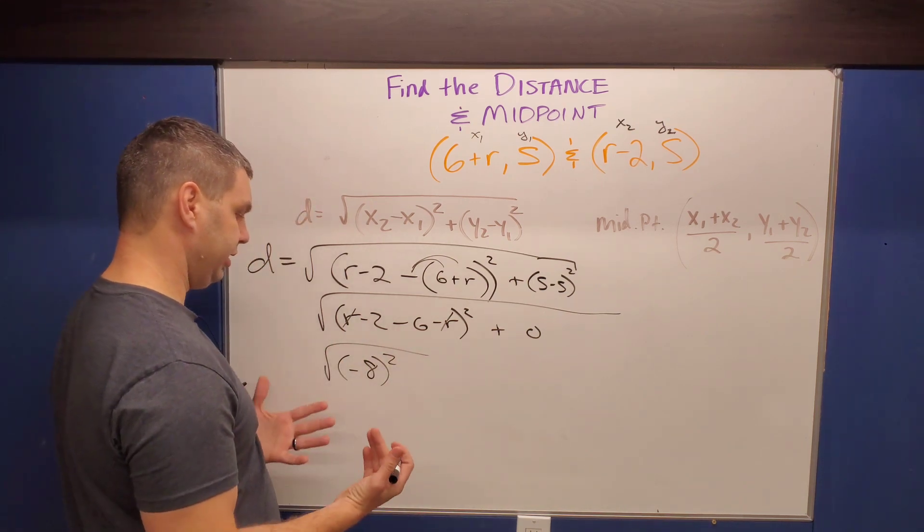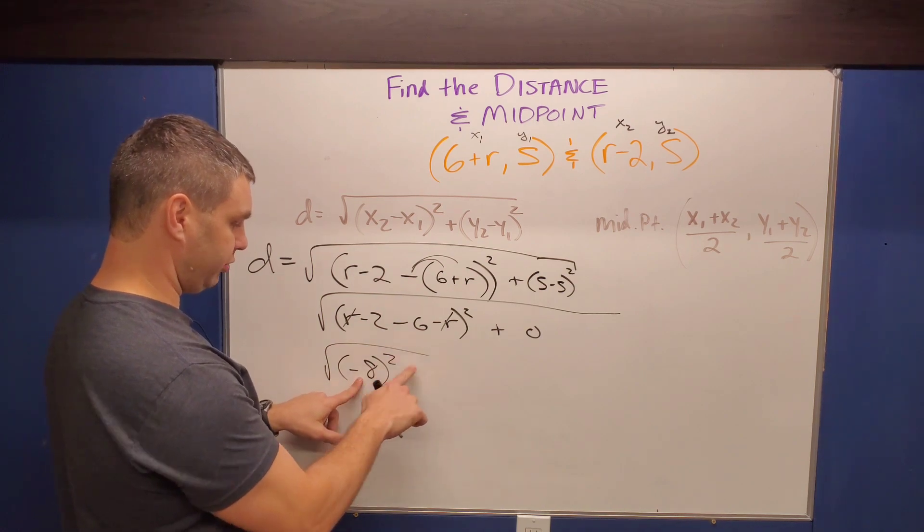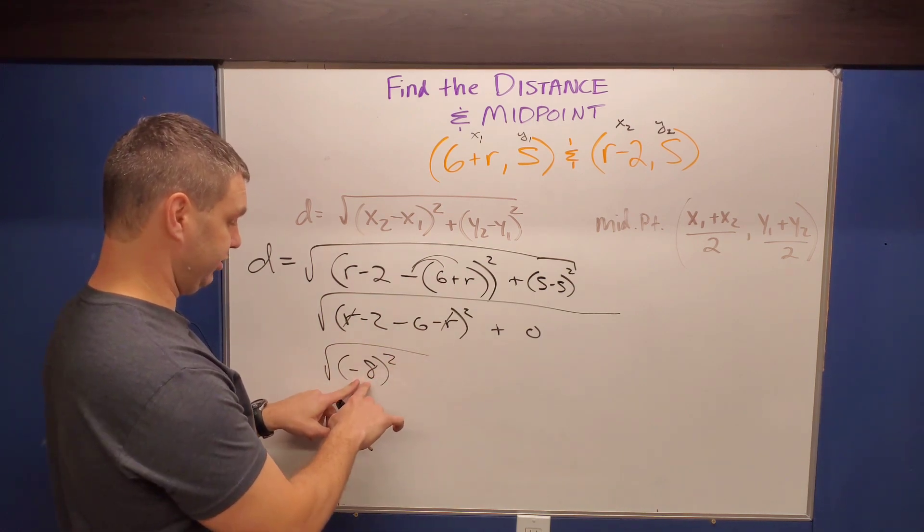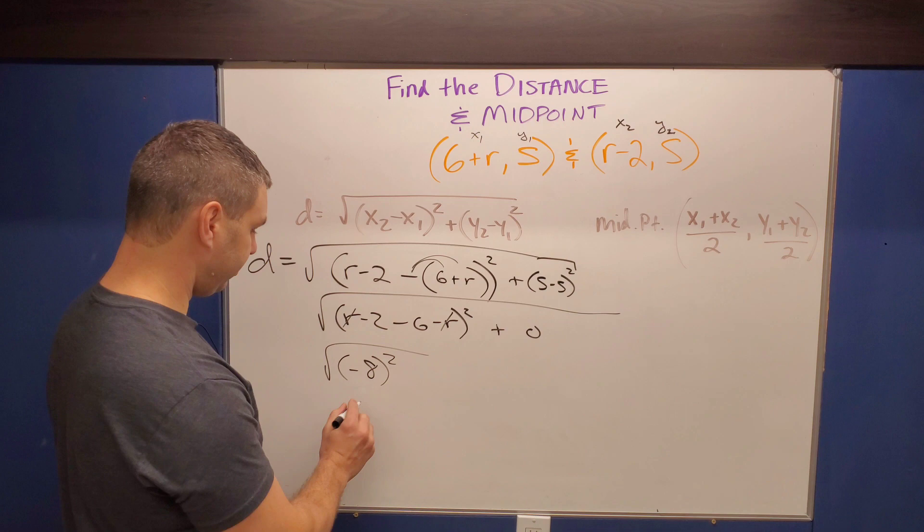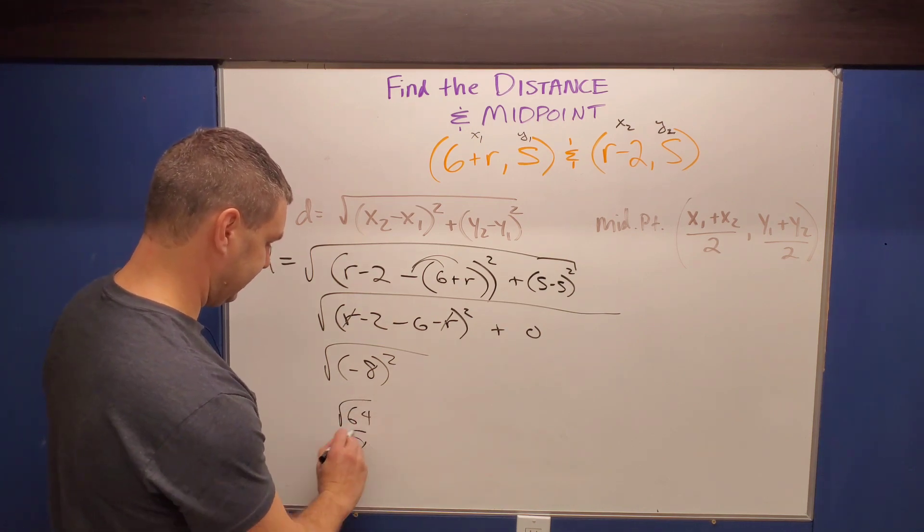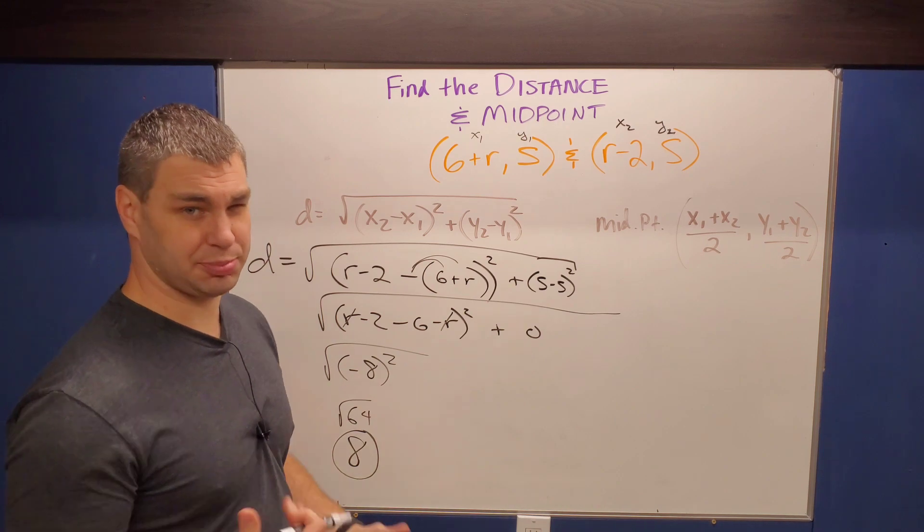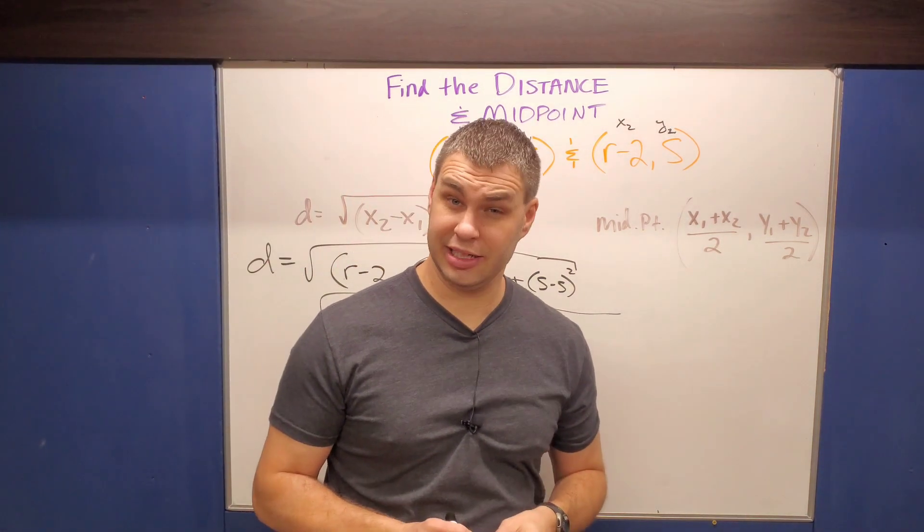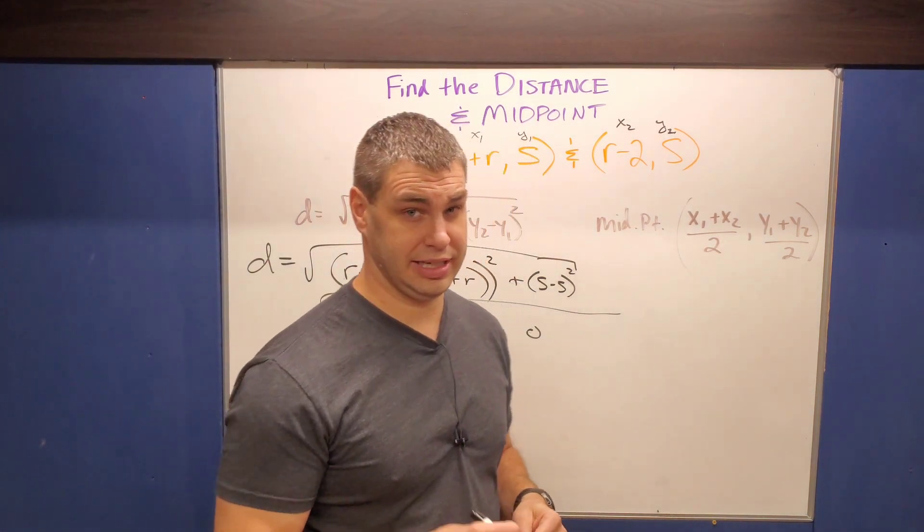All right, so if we take care of those things, really what will happen here is anything squared is positive. So negative eight squared is a positive 64. And then if you take the square root of that, you will get a distance of eight, all right? Really it's plus or minus eight, but remember distance can't be negative. So we're just gonna use the positive case, which is eight.